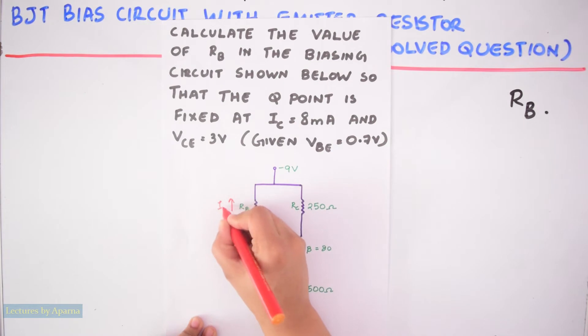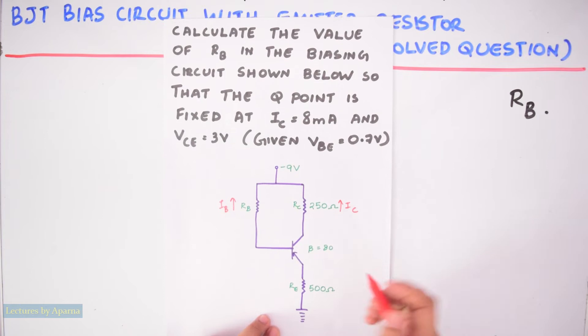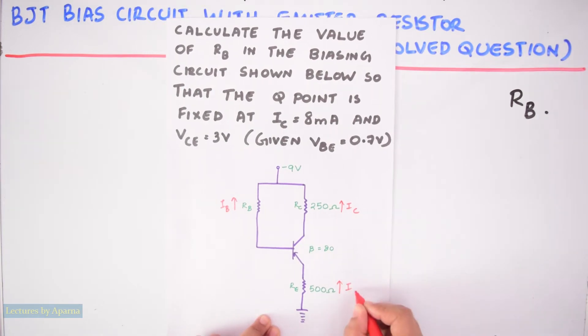This is IB. This is current IC through the resistance RC. This is current IE.